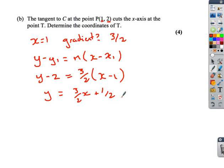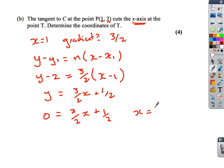This is the equation of the tangent. When does it cross the x-axis? It crosses the x-axis when y equals 0. Setting y equal to 0, the x value is minus 1 third. So when x is minus 1 third it crosses the x-axis. Therefore the coordinate of T is (−1/3, 0).